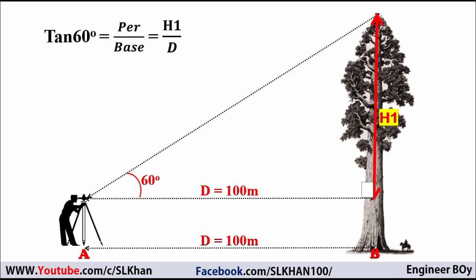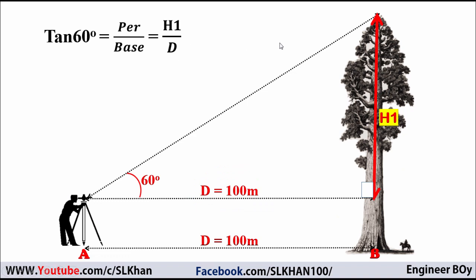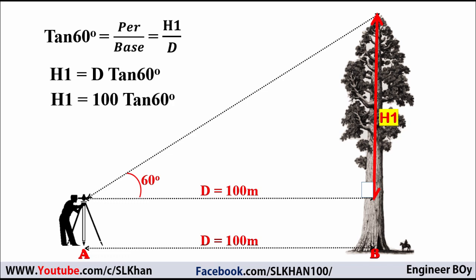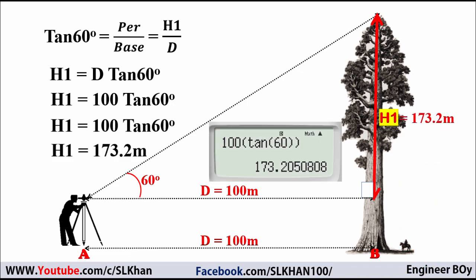It's all about trigonometric ratios. The tangent of theta equals the perpendicular divided by the base. Here, the perpendicular is h1 and the base is the distance between the tree and the instrument. So we multiply d to both sides to get h1 equals d times tangent of 60 degrees. Since d is 100 meters, h1 equals 100 times tangent of 60, which gives us 173.2 meters.